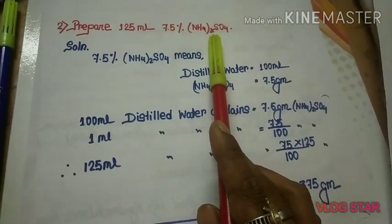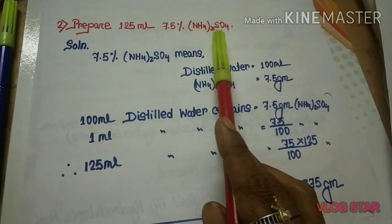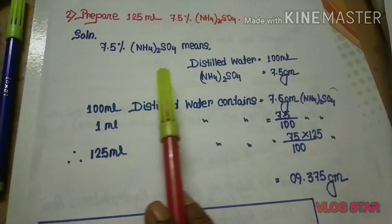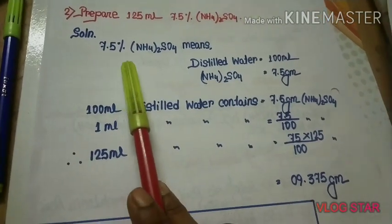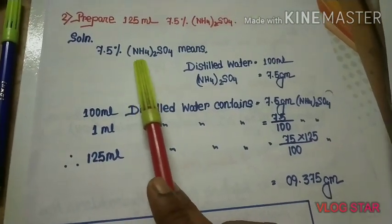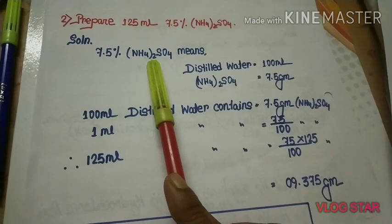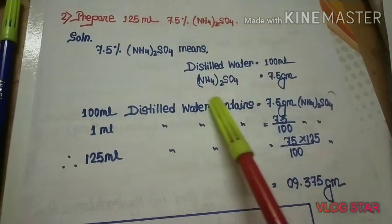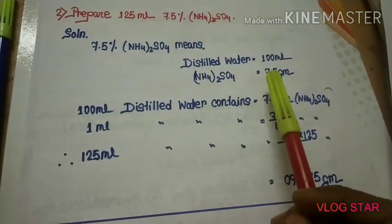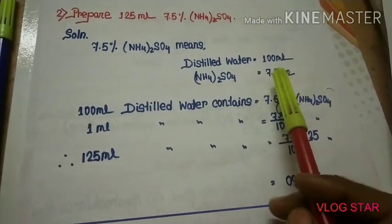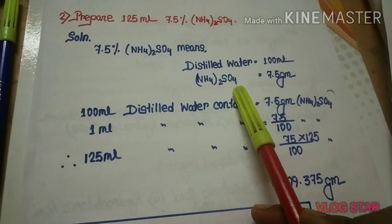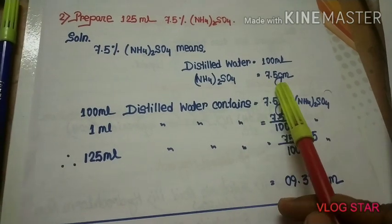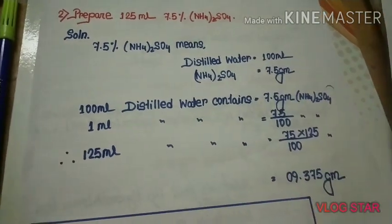Now prepare 125 ml of 7.5% ammonium sulfate (NH₄)₂SO₄. 7.5% (NH₄)₂SO₄ means 100 ml distilled water contains 7.5 grams of ammonium sulfate.